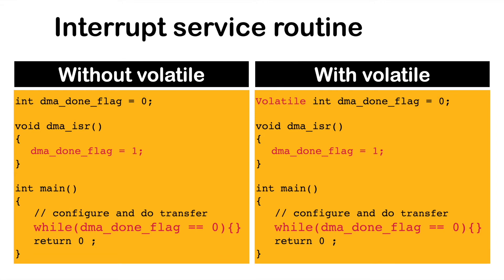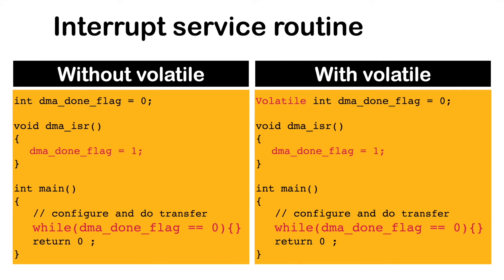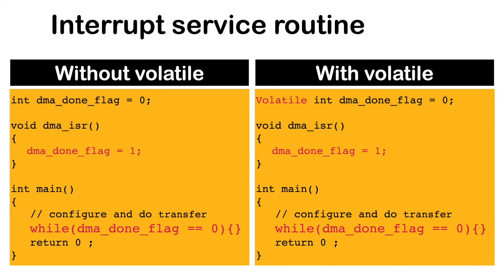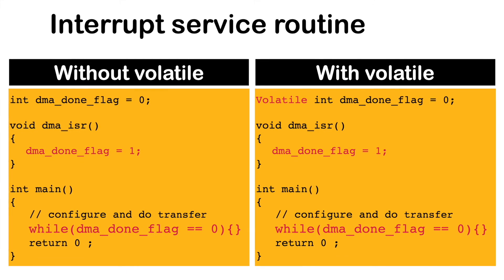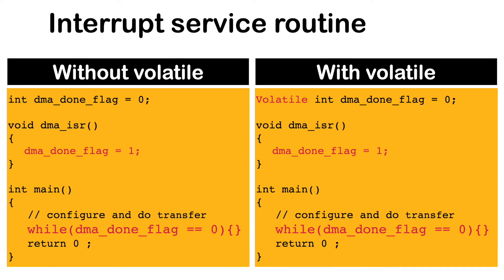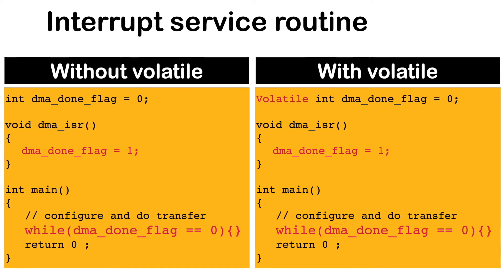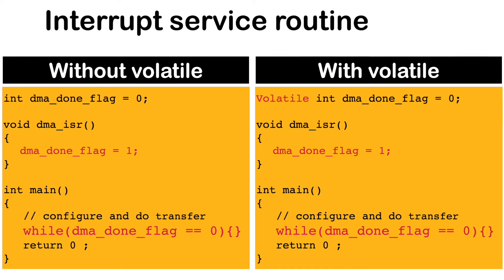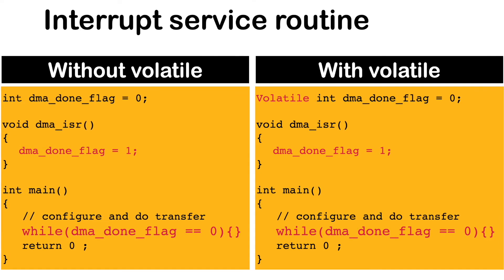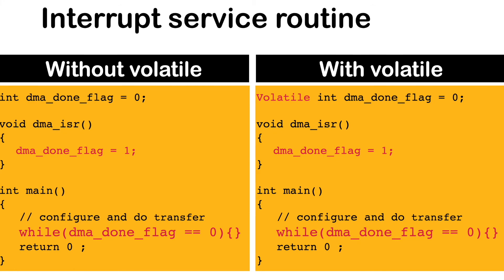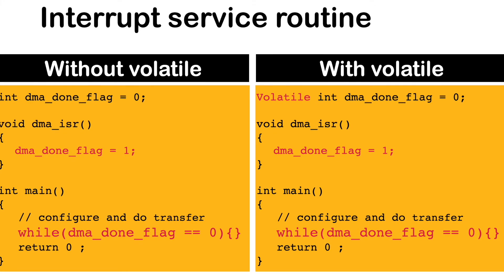A similar scenario occurs with interrupt routines, since an interrupt routine is also not a normal sequential execution. In this example, we wait in a while loop in main for a DMA transfer to complete. After the DMA transfer finishes, the interrupt routine dmaisr gets called, where the dma_done flag is set to 1. Again, execution will be stuck in the while loop in the left side scenario where volatile is not used for the dma_done flag, and it will exit the while loop in the right side scenario where volatile is used.